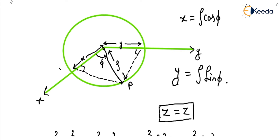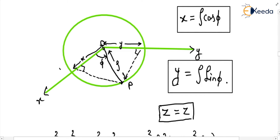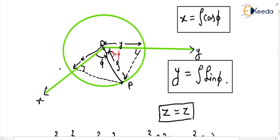This is the cross section of the cylinder, which is a circle, and the point P is here. The distance of the point from the origin is rho and the angle from the x-axis is phi. Now x can be written as rho cos phi, and y can be written as rho sin phi, because this angle is 90 minus phi. If OP makes angle phi with the x-axis, it makes angle 90 minus phi with the y-axis. Z is equal to z, because the z coordinate is the same in both coordinate systems.